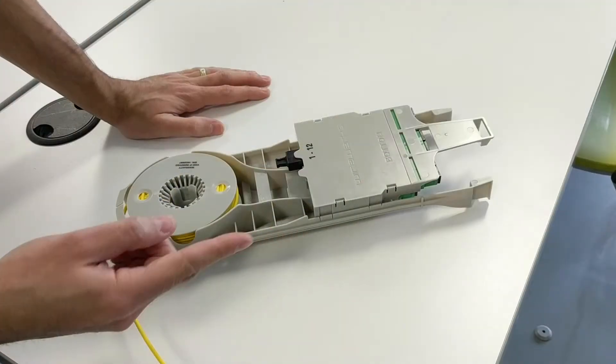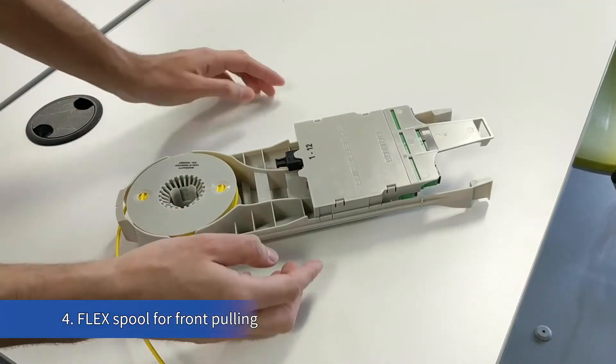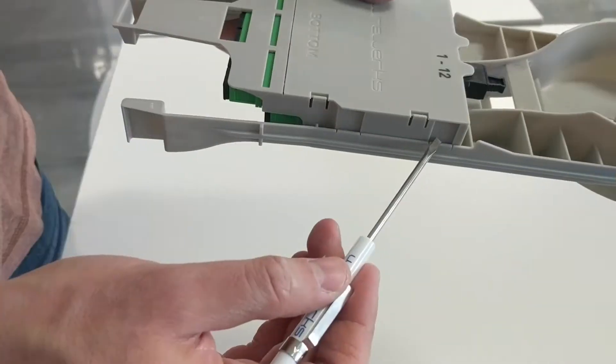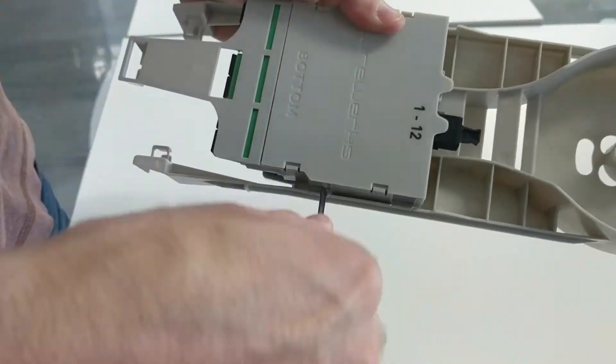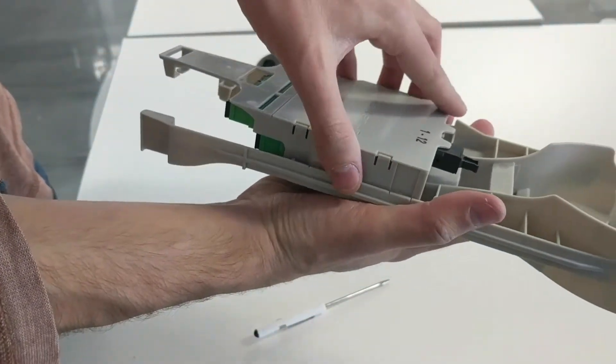The next demonstration will show you how to use the front pulling method. First, remove the distribution module from the base. You can do this by releasing the two supporting clips on each side using a small flathead screwdriver.